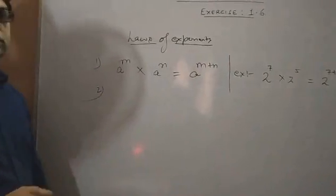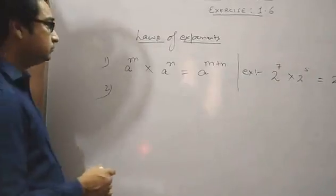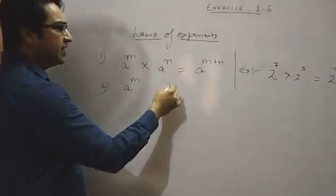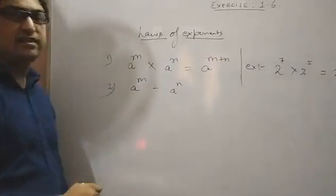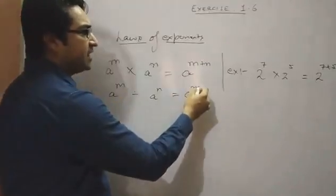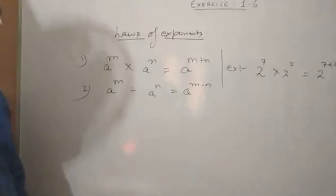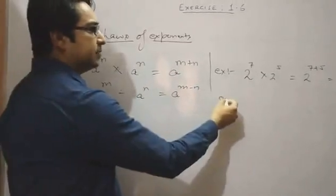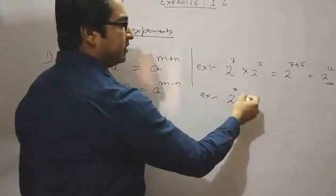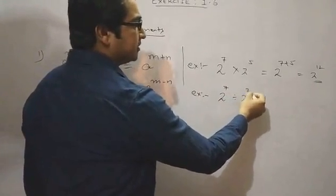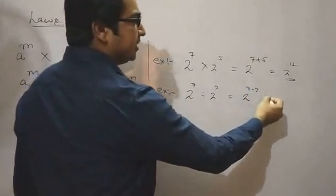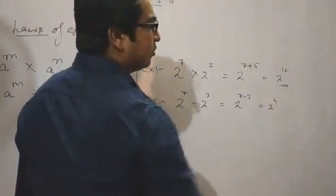Now see the second law of exponents. When the bases are same and the powers are different and there is a divide sign between them, then we will subtract the powers, that is m minus n. For example, 2 raised to the power 7 divided by 2 raised to the power 3 becomes 2 raised to the power 7 minus 3, that is 2 raised to the power 4.